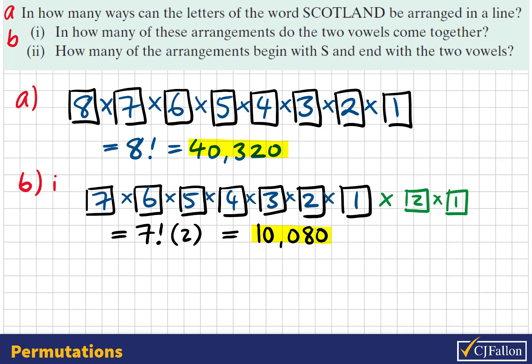In question B2, how many of the arrangements begin with the letter S and end with two vowels? Let's again imagine we have 8 positions, or 8 tiles, and consider our options for each of them. We know it begins with the letter S, so we only have one option for the first position.